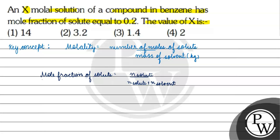Now, in the question we have X molal solution, which means X moles of solute are present in 1 kg of solvent. So the mass of solvent will be equal to 1 kg, or we can write it as 1000 grams.